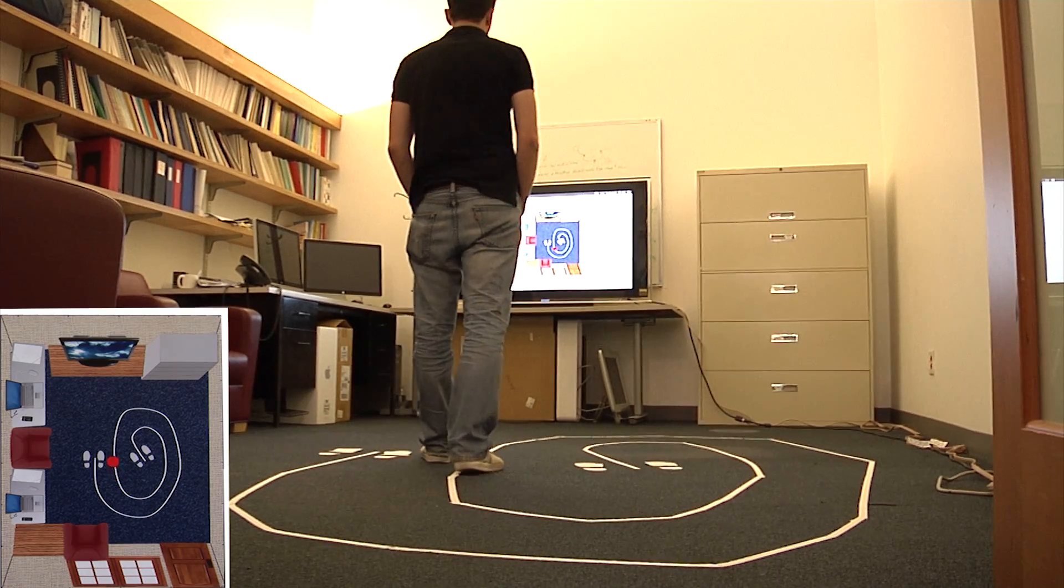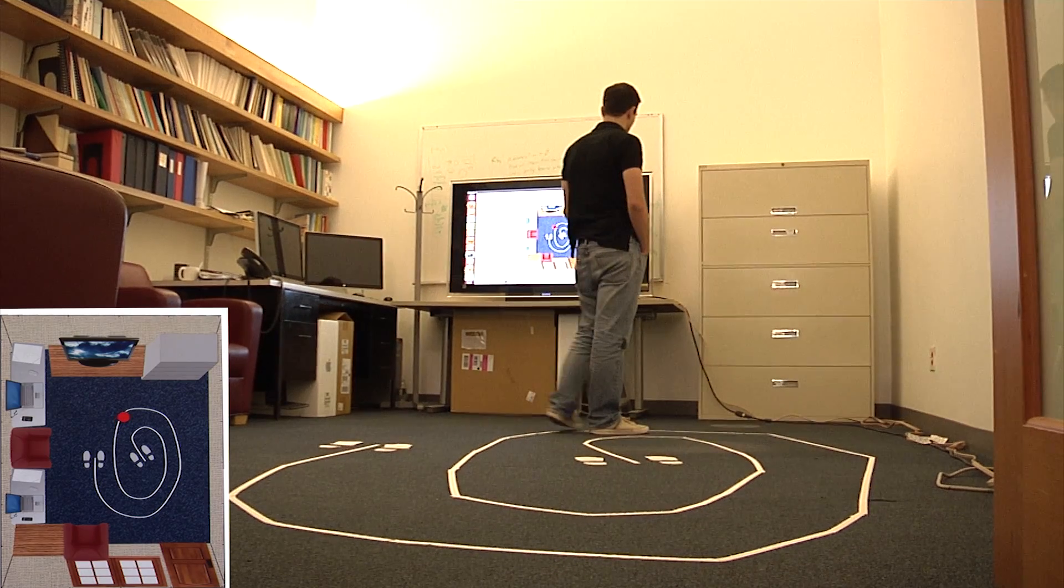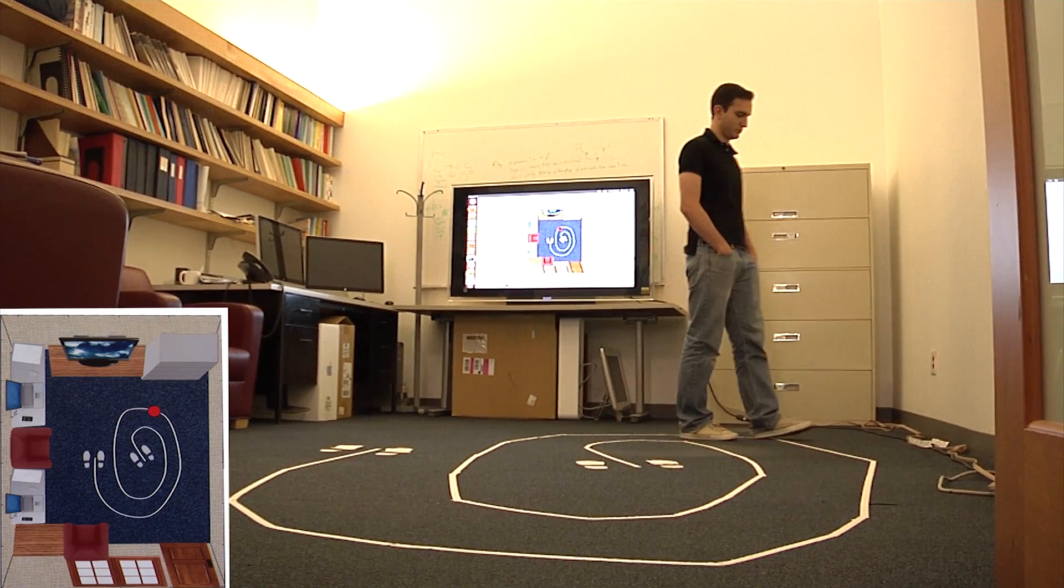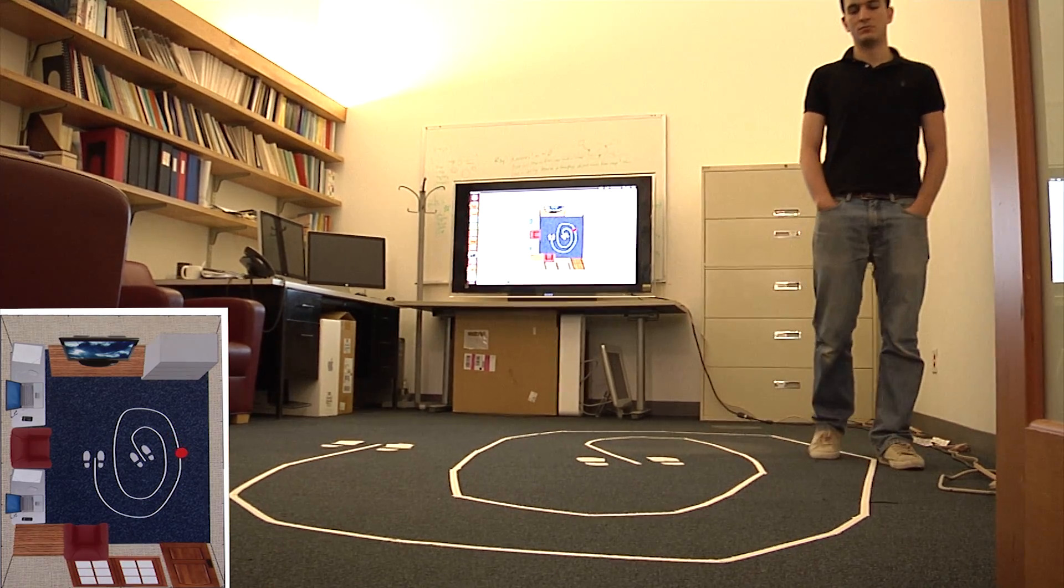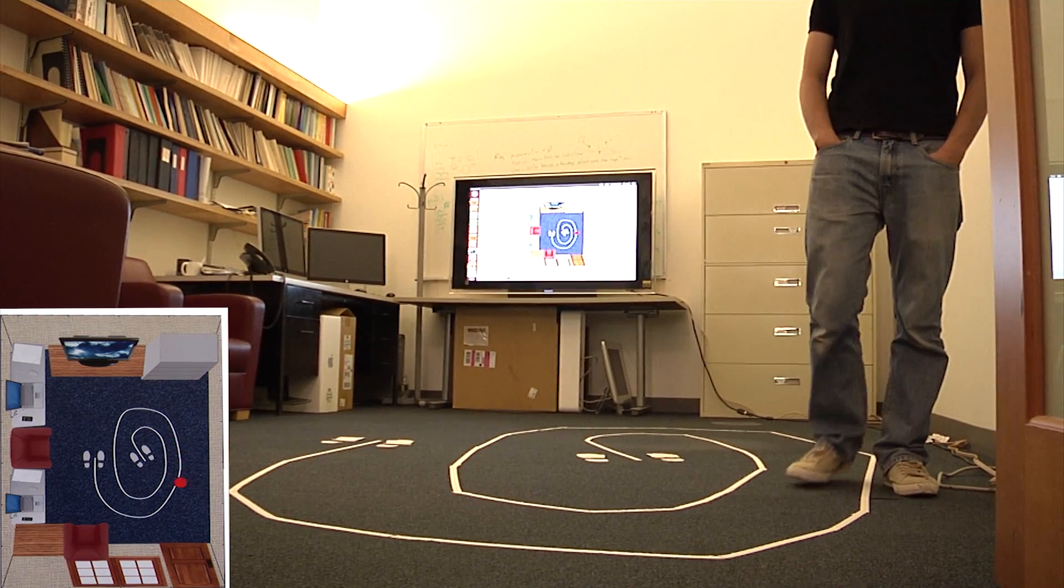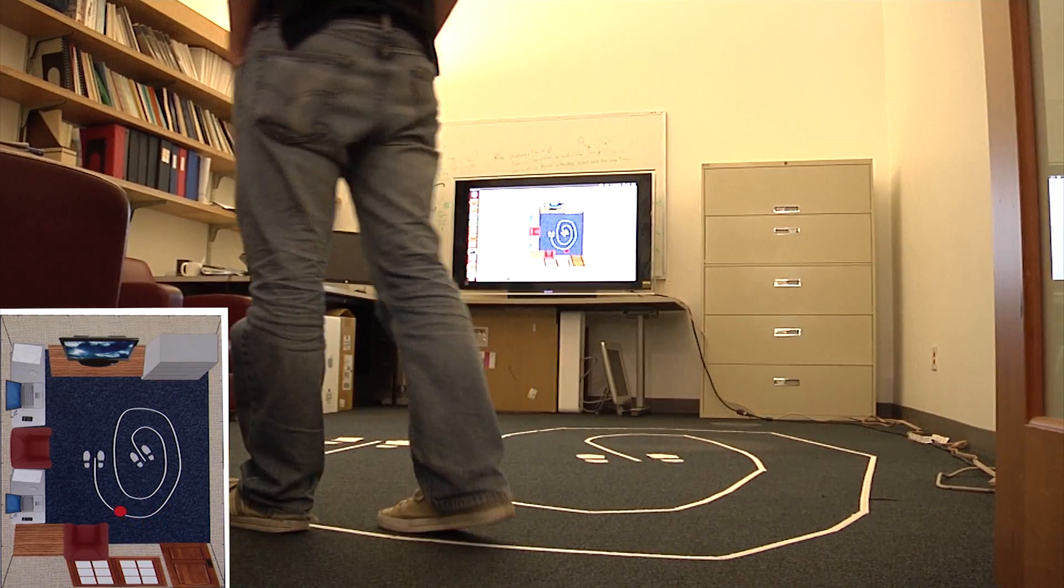The system has a large number of applications. For example, it performs highly accurate localization simply using reflections of a person's body without requiring the person to hold any device. It can also be used in gaming, where it can track players as they run down hallways or hide behind furniture and walls from video game enemies.